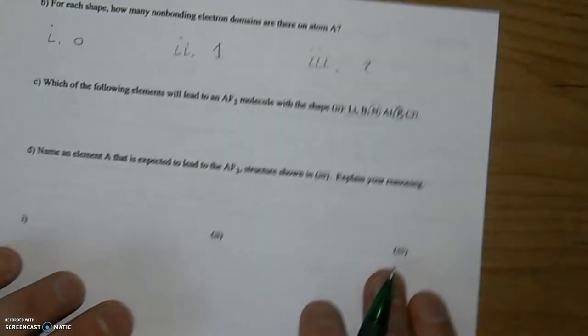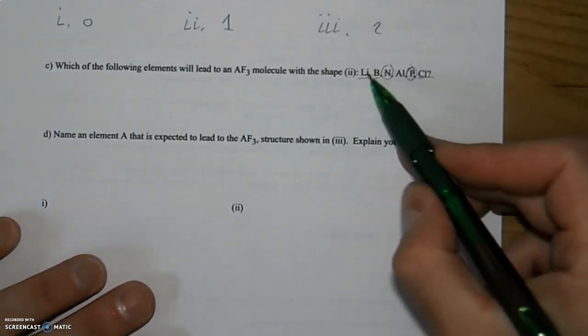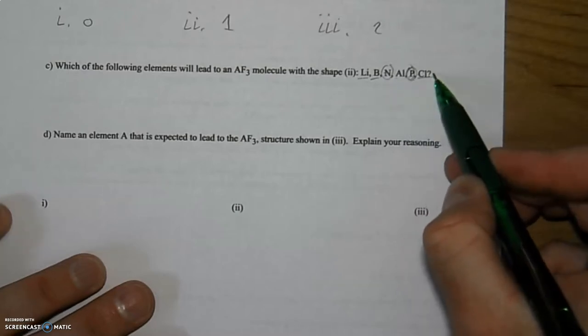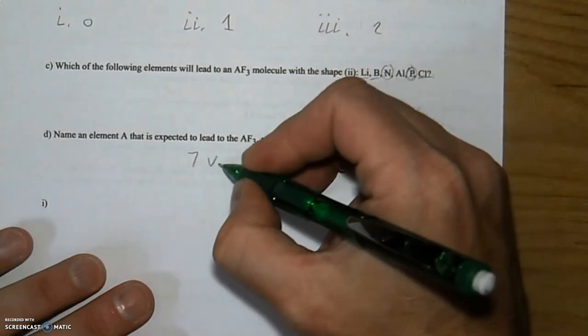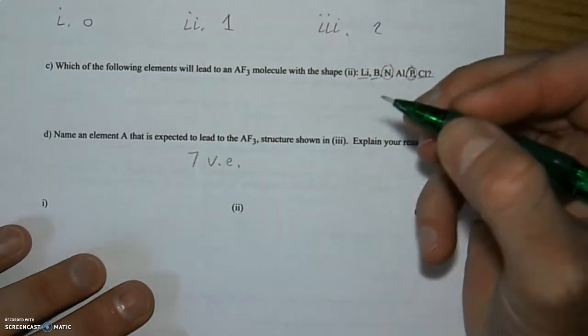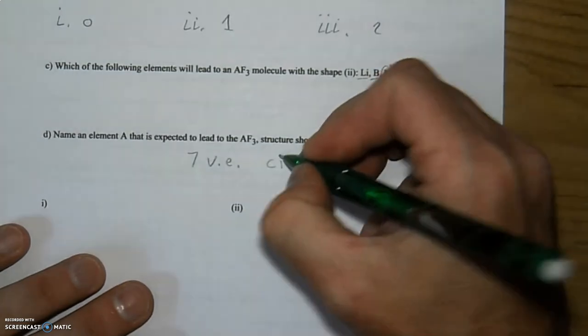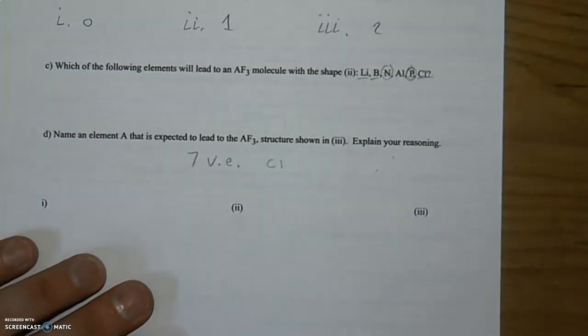Well, no, no, no, no, no, nope, that one right there. So I need someone with seven valence electrons and that's going to give us chlorine as our best choice, our only choice in this example.